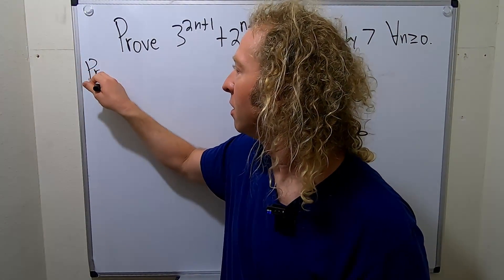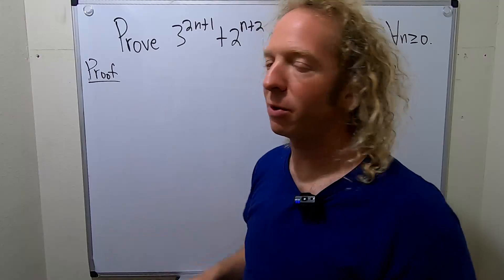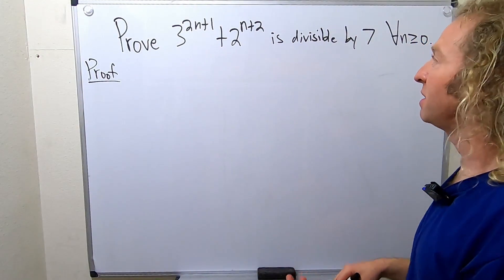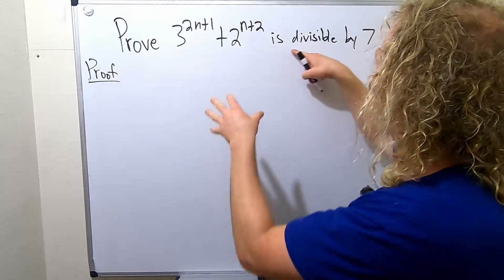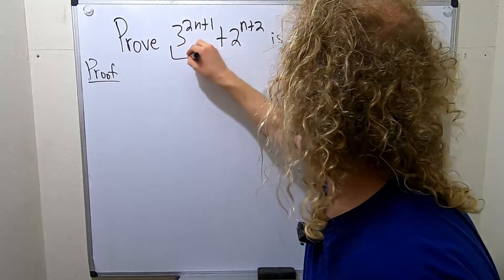Proof. So whenever you start an induction proof, you always want to start with the base case. So the base case is that you prove your statement is true. This is your statement, right? S sub n is divisible by 7, so this is your statement.